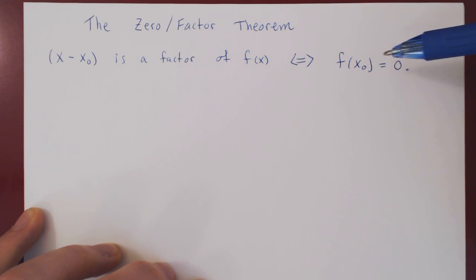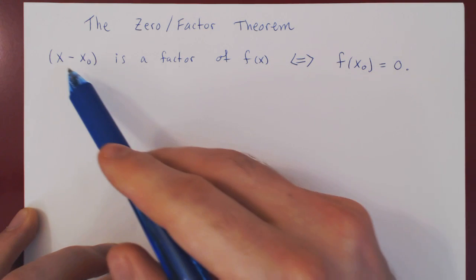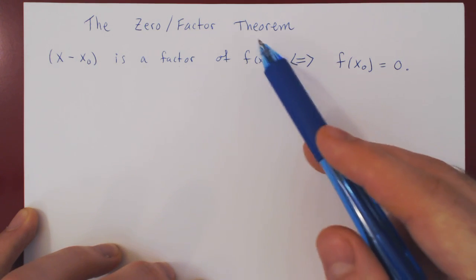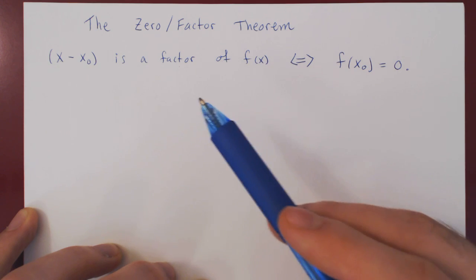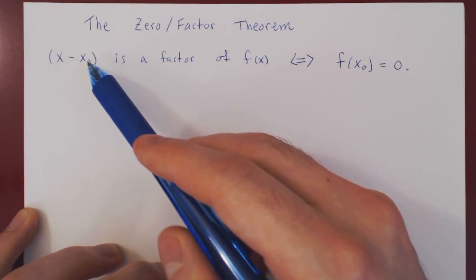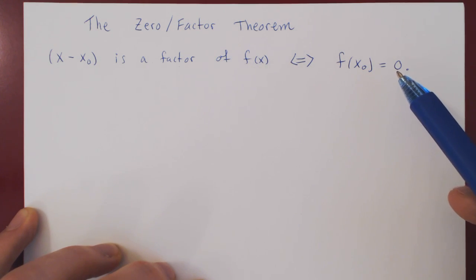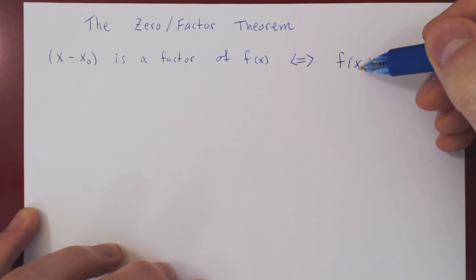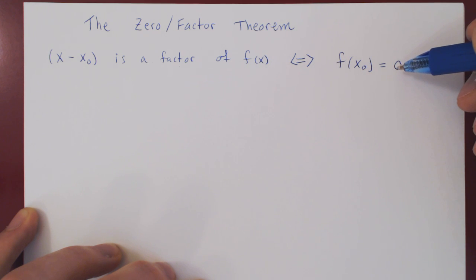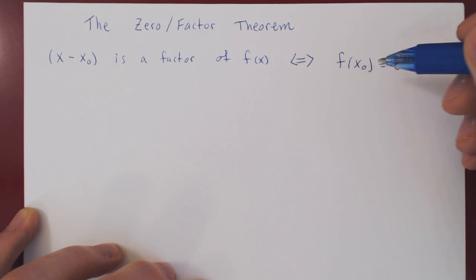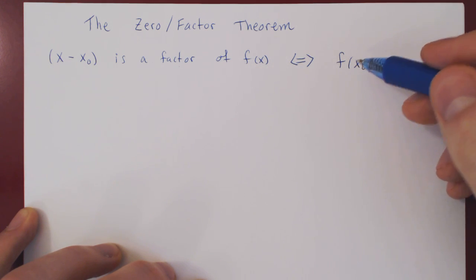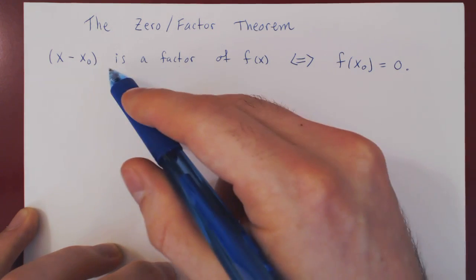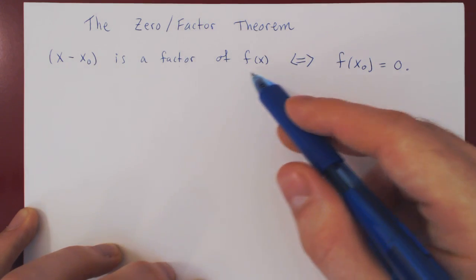They are either both true or both false, which means if you have one, you automatically have the other. So if x minus x₀ is a factor of our polynomial, automatically f of x₀ must be equal to zero. And conversely, if you can find a value that makes a polynomial equal to zero, automatically x₀ will give you a factor in the form of x minus x₀.